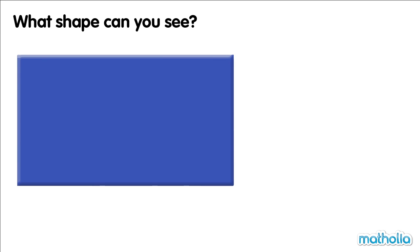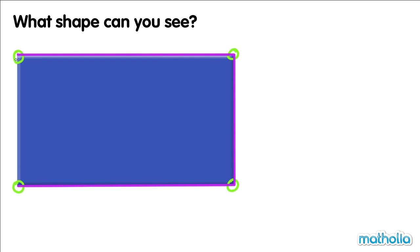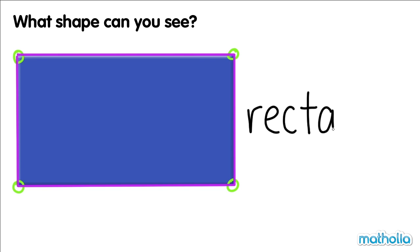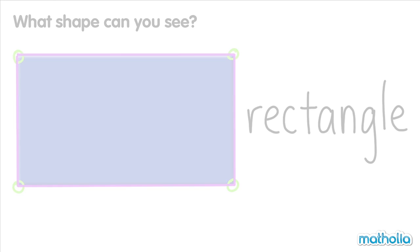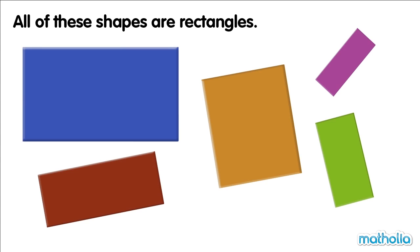What shape can you see? There are one, two, three, four corners. And there are one, two, three, four sides. This shape is a rectangle. Rectangle. All of these shapes are rectangles.